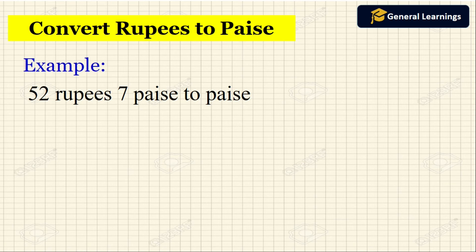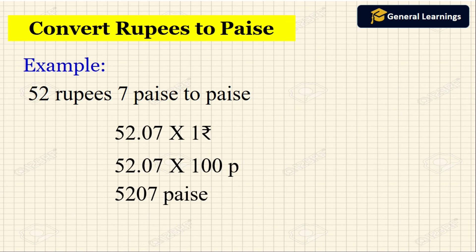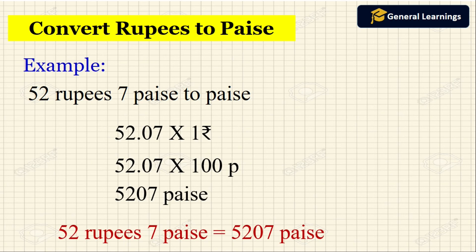Here they have given 52 rupees 7 paise to convert to paise. That can be written as 52.07 into 1 rupee. Note that after the dot, paise should always have 2 digits. Since 1 rupee equals 100 paise, 52.07 into 100 gives us 5207 paise.